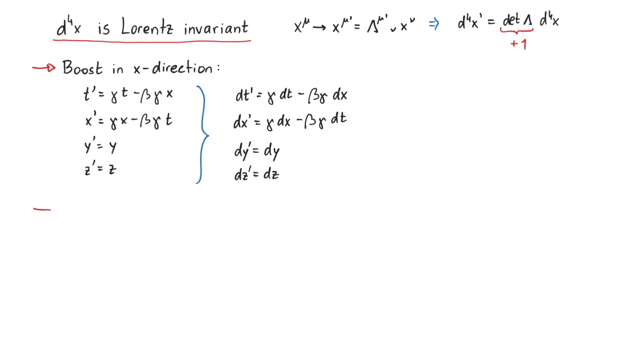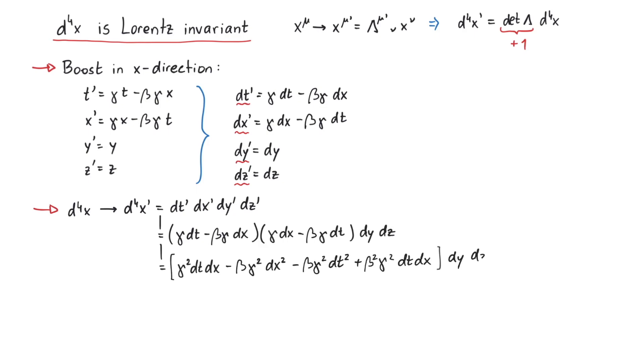So if we take d4x and boost it to dt prime, dx prime, dy prime, dz prime, we can use the expressions we just derived. After multiplying the brackets, we see that we get some strange dt squared and dx squared terms, as well as this term in front of dt dx will not be 1. So what's happening here? Why doesn't this work?